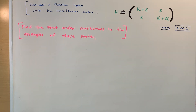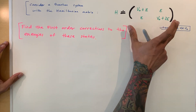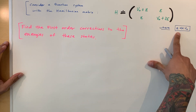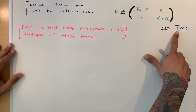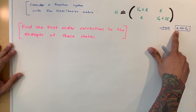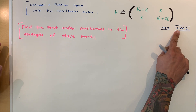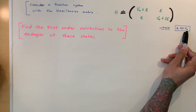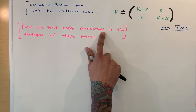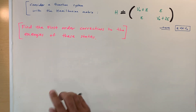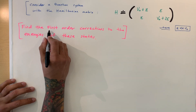Welcome back to Genius Learning. In this video we're looking at a quantum problem, considering a quantum system with a Hamiltonian matrix where epsilon is much smaller than the potential. So the perturbation is very small compared to the potential, and we're asked to find the first-order corrections to the energies of these states.